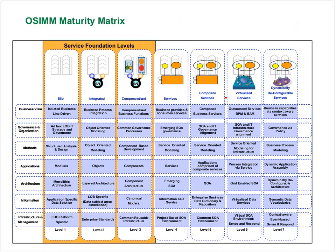Here is the OSIM maturity matrix — the 7x7 model showing maturity levels and domains. The domains across the horizontal include the business view, organization and governance, methods, applications, architecture, information domain, and infrastructure and management domain. Intersecting those are maturity levels one through seven. We gave them names, trying to make them as generic and descriptive as possible. You can pretty much see cloud computing begin to evolve in the later stages of the maturity model.